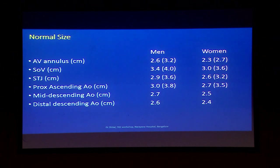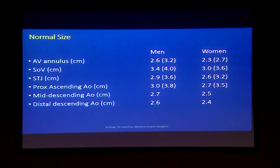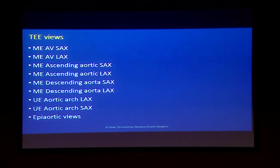Normal sizes for men and women are shown here with the upper limits in brackets: annulus 2.6, sinus of Valsalva 3.4, ST junction 2.9, and aorta 3.0, 2.9, 2.6 for ascending, descending, and distal respectively.